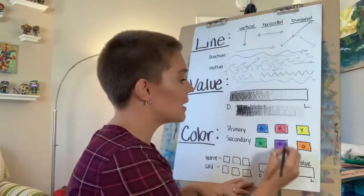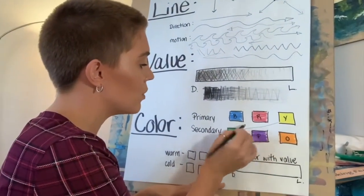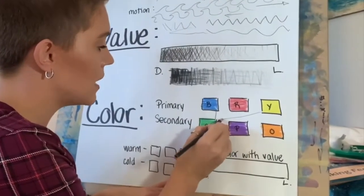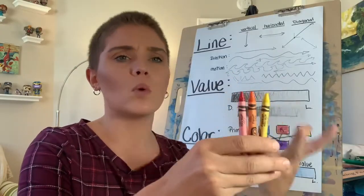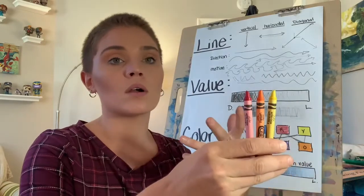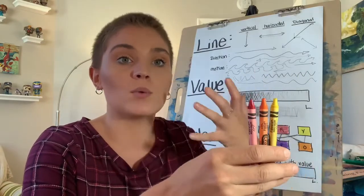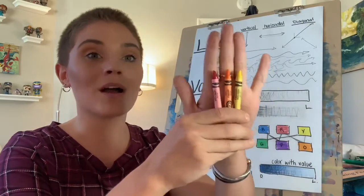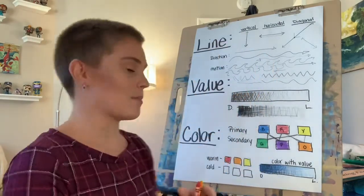But yellow, when it mixes with blue, it gives us green. So you can think of things that keep you warm, like the sun, or maybe like a fire would and how it would warm you up — these would be warm colors. And that's how I like to remember them.